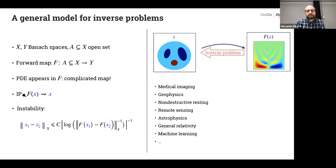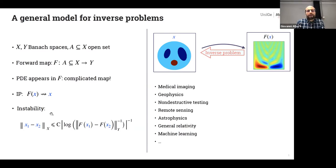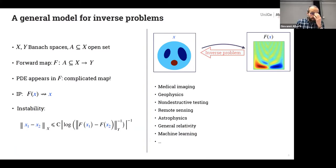The inverse problem consists in reconstructing X from the knowledge of F(X). If we want to characterize instability: every time one has only a log-type stability estimate, the inverse problem is very unstable. It is very difficult to reconstruct the unknown if noise or modeling errors are present. The Calderón problem applies to electrical impedance tomography, but this setup applies to many different domains — what I am going to tell you applies to many different inverse problems.